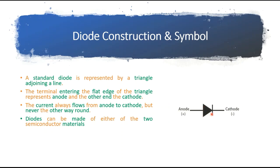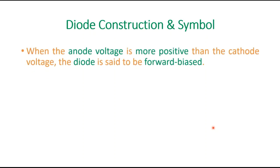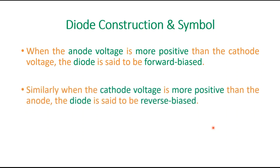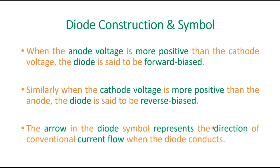Diodes can be made from either of two semiconductor materials: silicon and germanium. When the anode voltage is more positive than the cathode voltage, this type of diode is called forward biased. When the cathode voltage is more positive in comparison to the anode voltage, that diode is said to be reverse biased. The arrow in the diode symbol represents the direction of conventional current flow when the diode conducts.